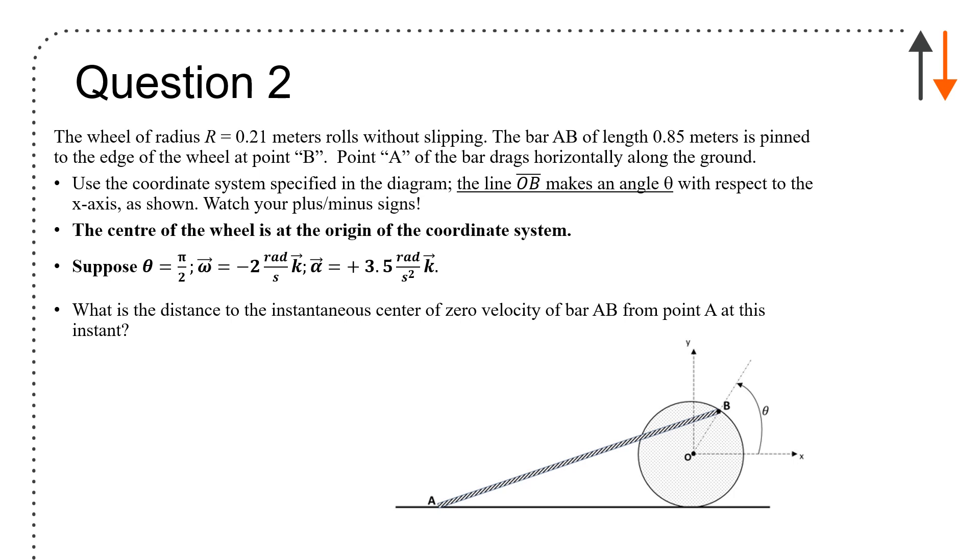Question 2: You have a wheel of radius 0.21 meters that rolls without slipping. The bar AB is pinned at the edge at point B and point A. Use the coordinate system specified in the diagram—the line OB makes an angle theta with respect to the x-axis. Make sure you follow the hints we give you. The center of the wheel is at the origin of the coordinate system. Suppose theta equals pi over 2, omega equals minus 2 rads per second k, and alpha equals positive 3.5 rads per second squared k. What is the distance to the instantaneous center of the velocity at point A? Theta is not pi over 2 in the diagram, but it was a way to start the problem, and you're expected to draw it out.